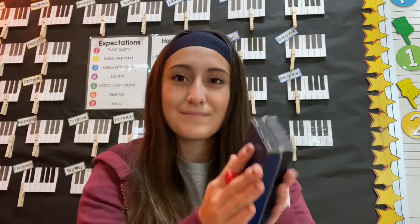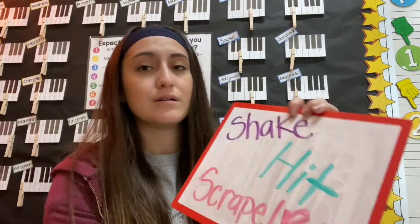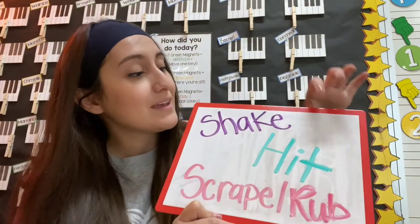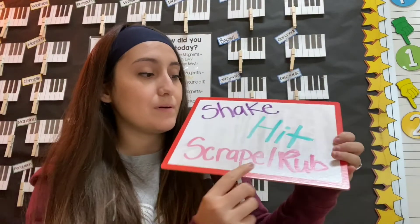The last category is scrape or rub. I have these instruments right here — these are called sand blocks and you rub them to make a sound. It sounds like this. Now this one's kind of tricky — is there something in your house that you can scrape or rub to make music on? See if you can find one of those. Those three categories we talked about were shake, hit, and scrape or rub.